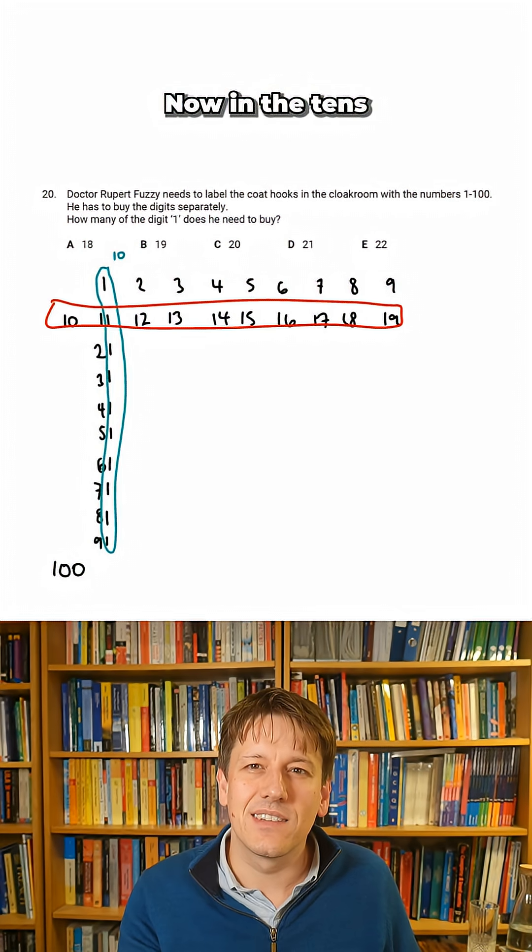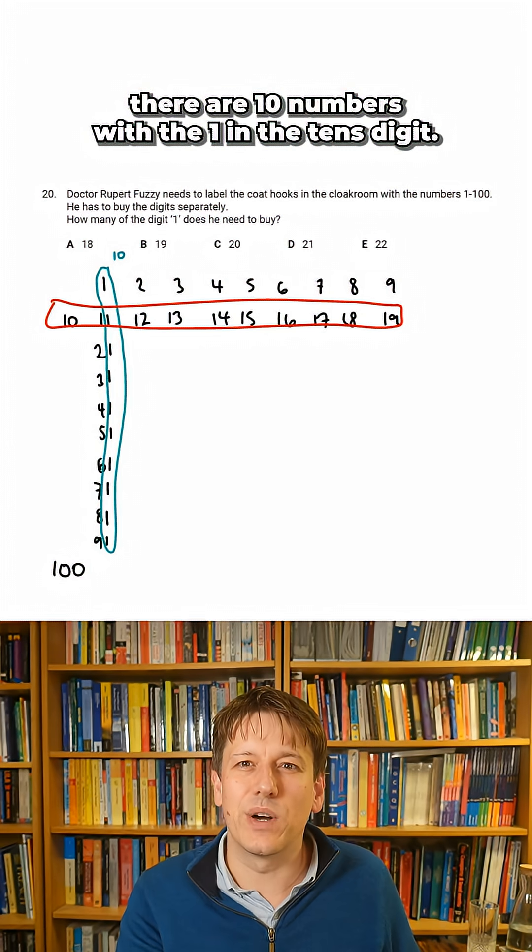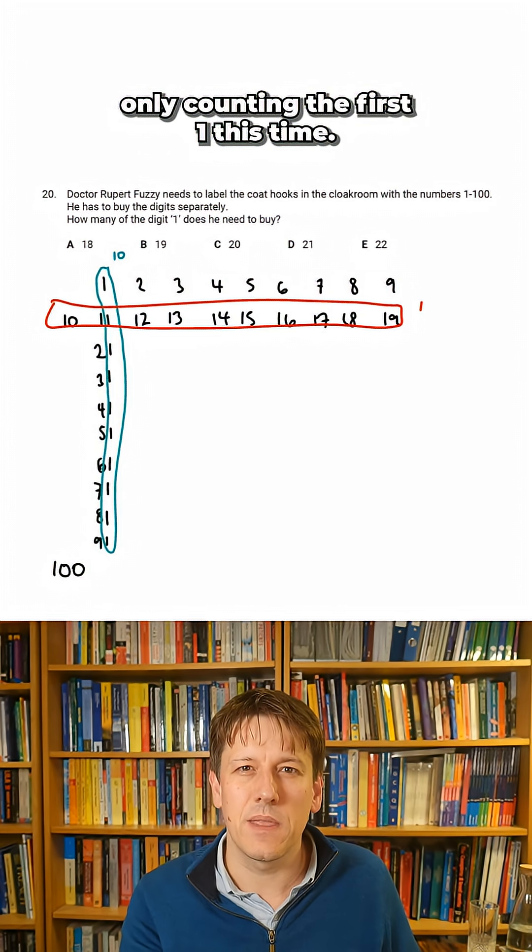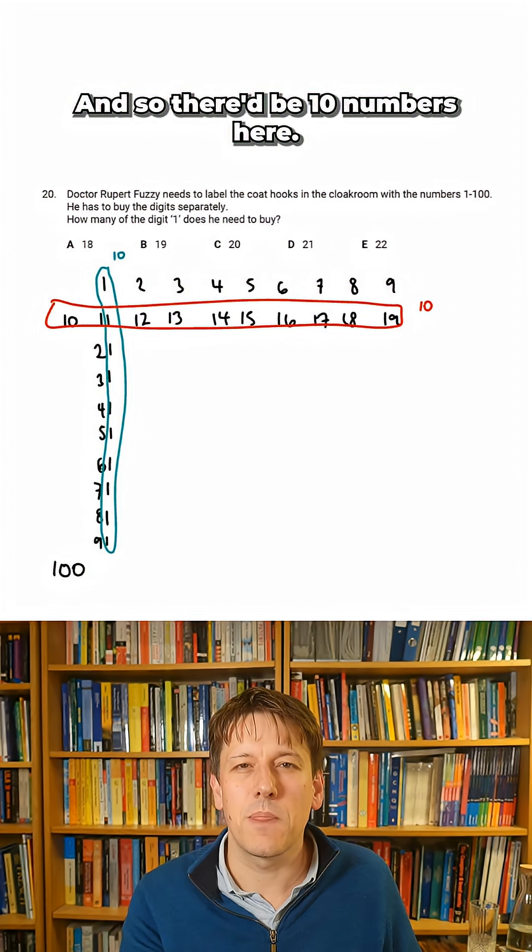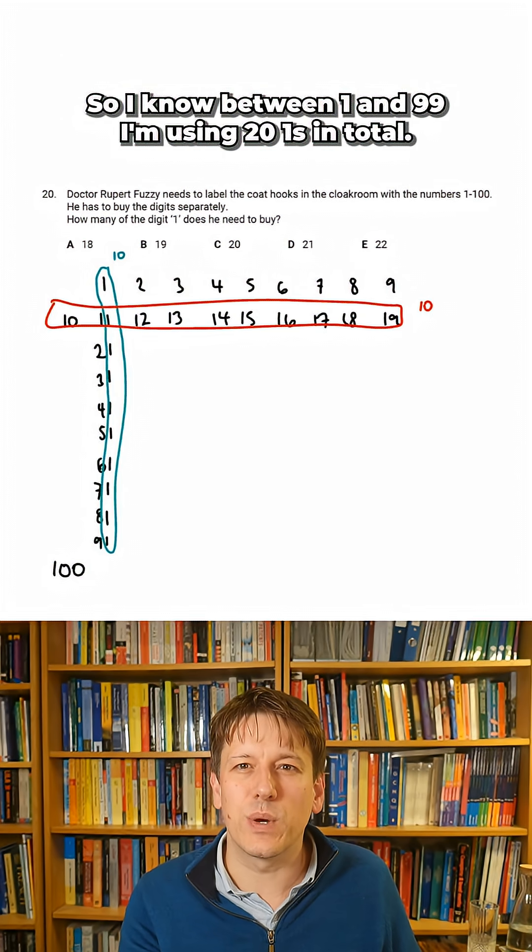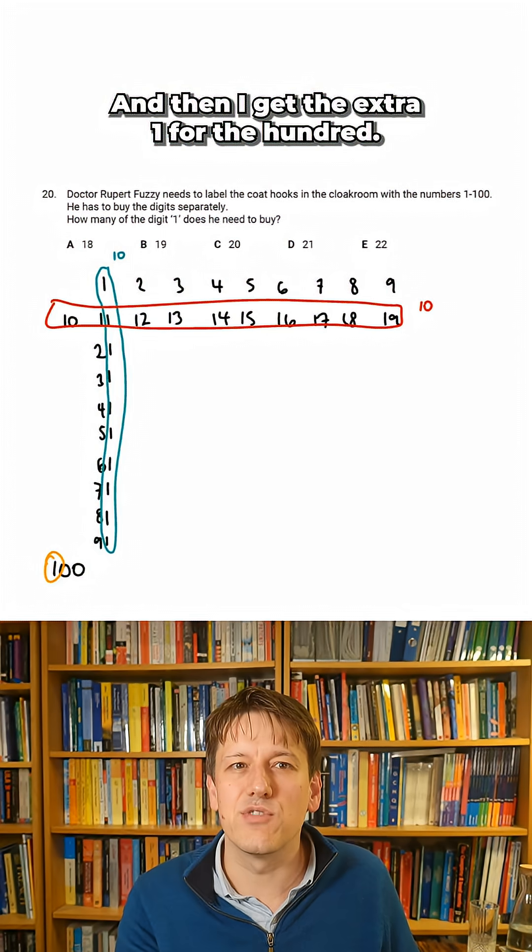Now in the 10s, there are 10 numbers with a 1 in the tens digit. Again, in the 11 here, I'm only counting the first 1 this time. And so there'd be 10 numbers here. So I know between 1 and 99, I'm using 20 1s in total. And then I get the extra 1 for the 100. And that gives me a total of 21,